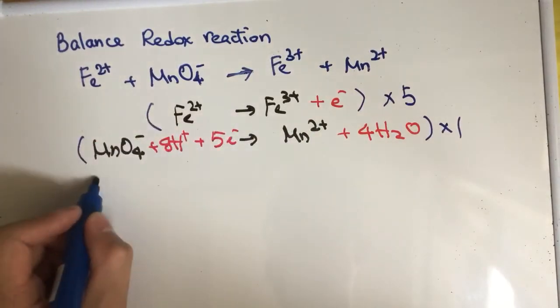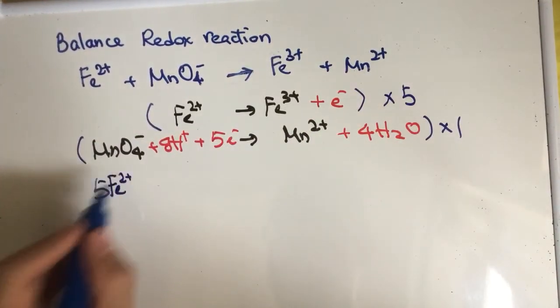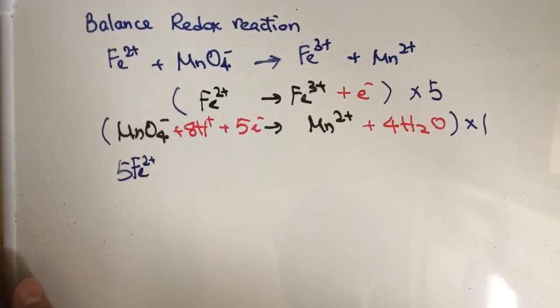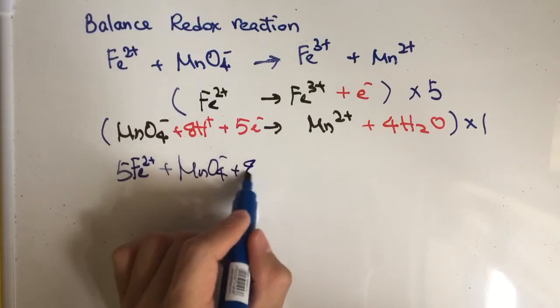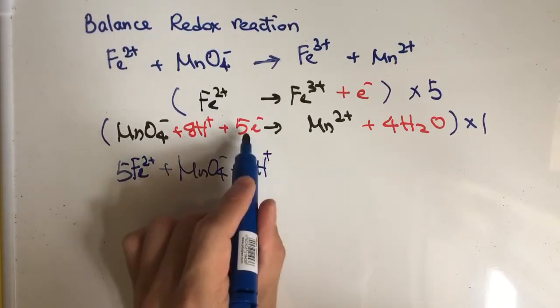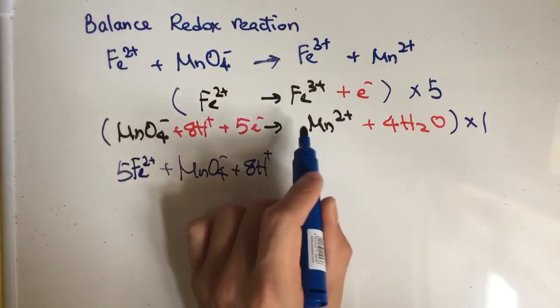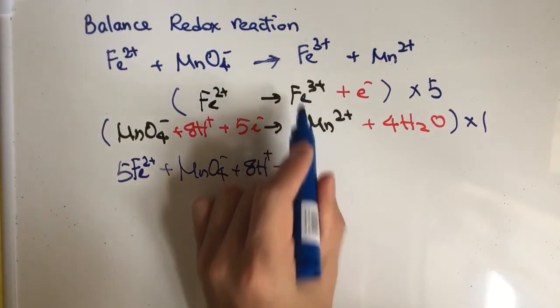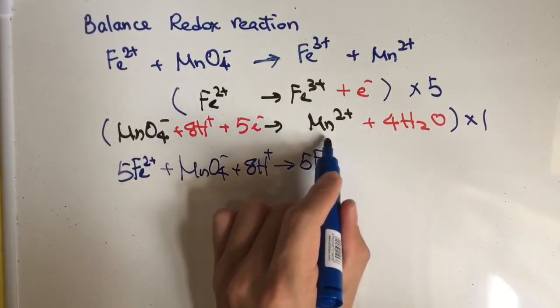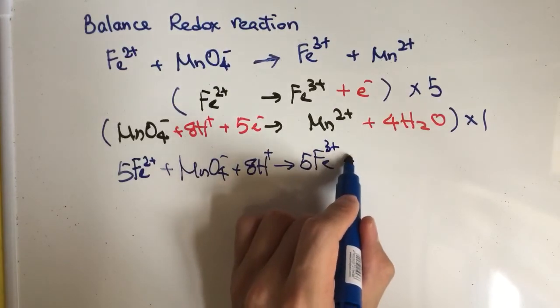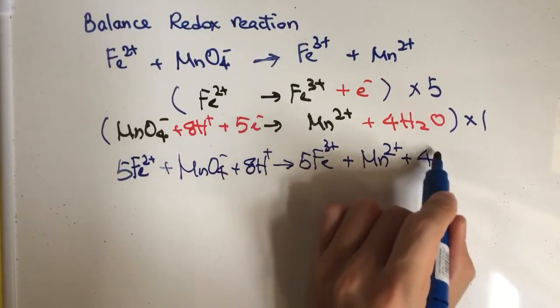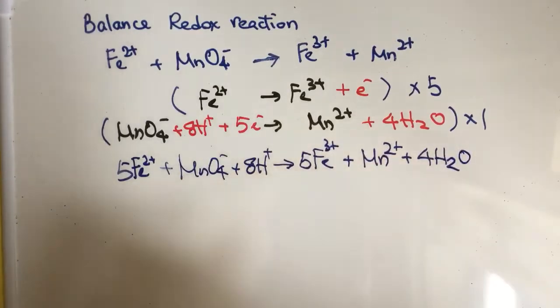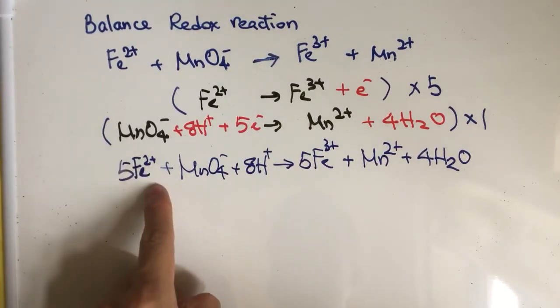So there will be five Fe2+, and then there will be one MnO4- plus. For the electrons, we don't have to write it because they'll cancel out each other. And it becomes five Fe3+ and one Mn2+ and last but not least, 4H2O. So this is actually the balanced redox reaction.